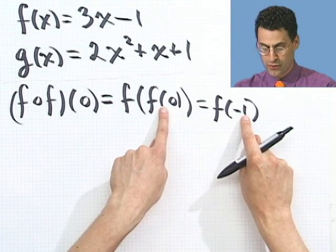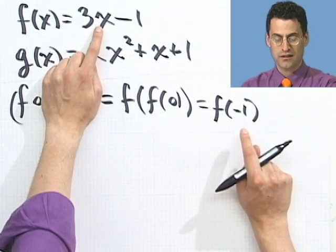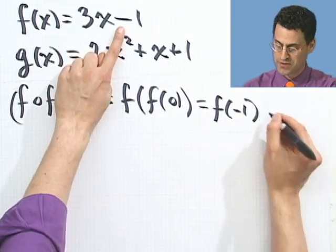And then what is f of negative 1? I take the output, negative 1, and push it back in to here. I see 3 times negative 1 minus 1, which equals negative 4.